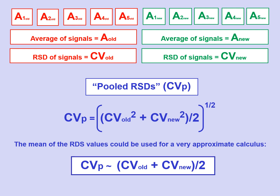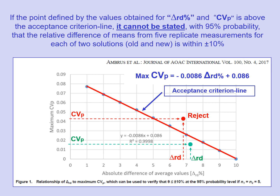Finally, it is sufficient to check whether the weighted coefficient of variation obtained — CVp — is greater or less than the maximum value max CVp defined by the linear equation established by Ambrose et al., for a value of the relative difference of the means equal to that obtained, ΔRD in percentage. In other words, if the point defined by the values obtained for ΔRD and CVp is above the acceptance line established by Ambrose et al., it cannot be affirmed with 95% confidence that the relative difference in the means of the responses obtained from five injections of both standards — the old and the new — is within ±10%.